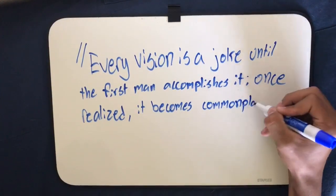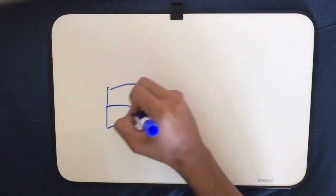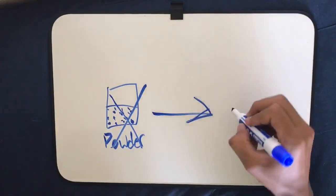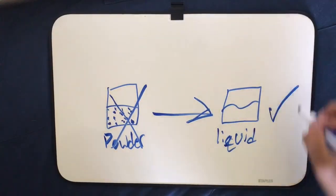Once realized, it becomes commonplace. He realized gunpowder rockets were very inefficient in converting energy into motion. Goddard then turned his attention from powder-fueled rockets to liquid-fueled ones.